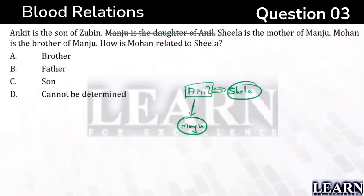I had not written whether Anil is the father or mother, because just by going through the name we cannot decide. Next, Mohan is the brother of Manju — so Mohan is the brother. This is Mohan. How is Mohan related to Sheila? Mohan is the son of Sheila.